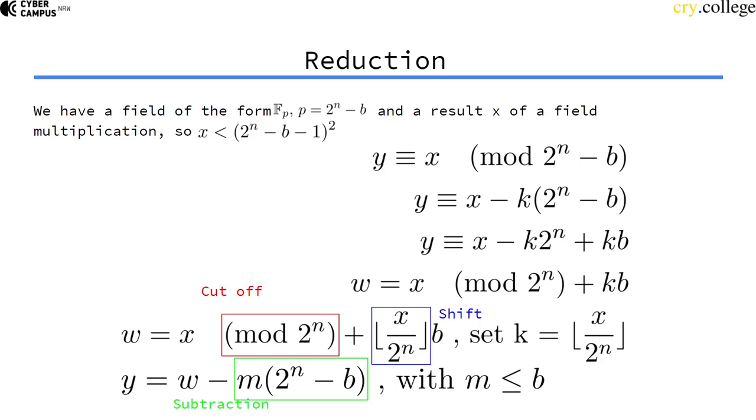And we have a subtraction and a multiplication. The m value is guaranteed to be smaller than b, and b was already small.